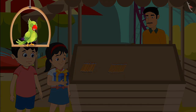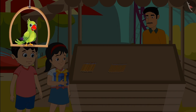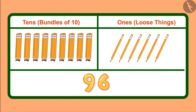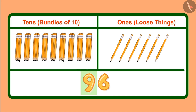Children, Pinky said it right and got the prize also. Now, can you tell how many 1's and 10's are there in 96? Come on, let's see. We write 96 like this, and in this 9 is in the 10's place and 6 in the 1's place. It means we have 9 tens, which we can also call 9 bundles of 10, and along with it 6 ones, meaning 6 loose pencils.